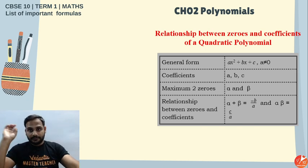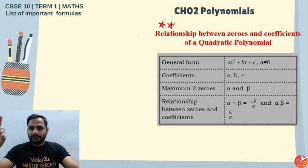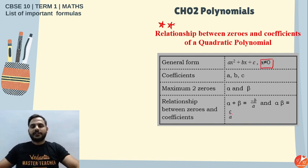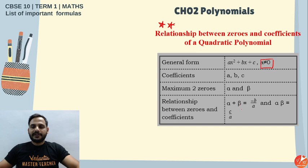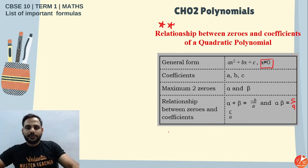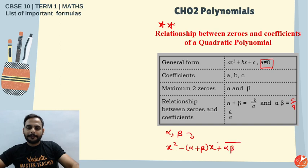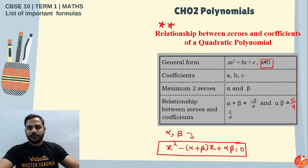Very important: the relationship between zeros and coefficients of a quadratic polynomial. A quadratic equation is of the form ax² + bx + c = 0 (where a ≠ 0). If alpha and beta are the two zeros, then alpha + beta = −b/a and alpha × beta = c/a. Also, if alpha and beta are the roots, the equation is x² − (alpha + beta)x + alpha·beta = 0.